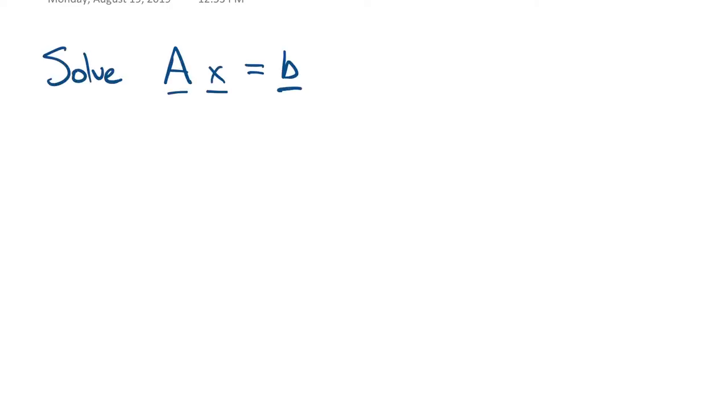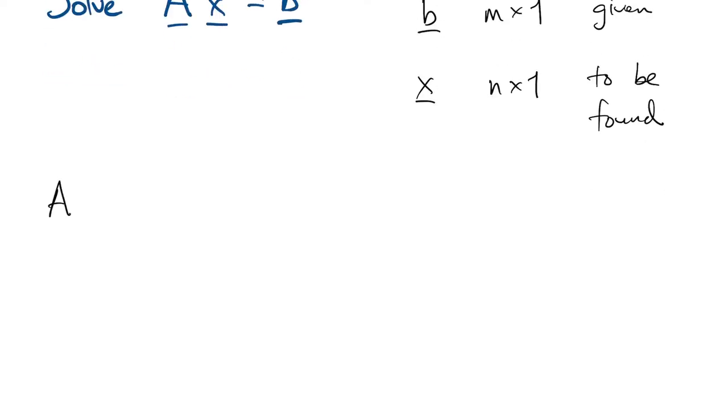One of our core problems is to solve linear systems of equations. So we write that as an equation Ax equals b, where A is an m by n matrix, b is an m by one vector, those are the knowns, and x is an n by one vector that is to be determined.